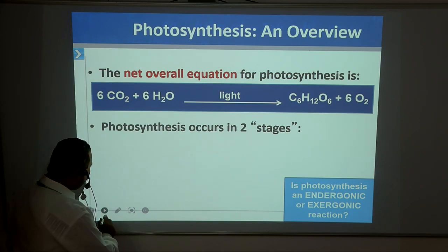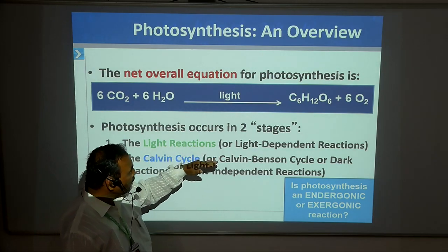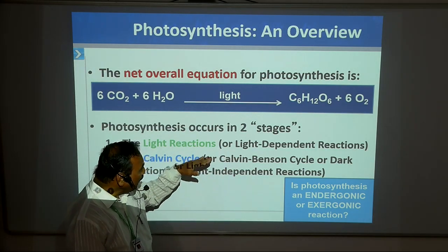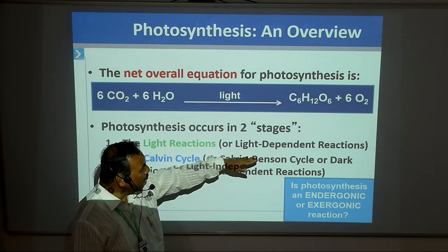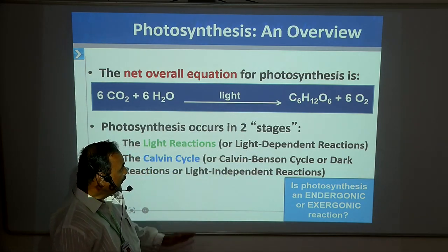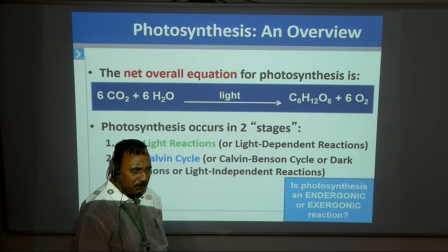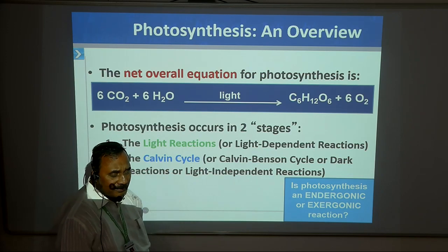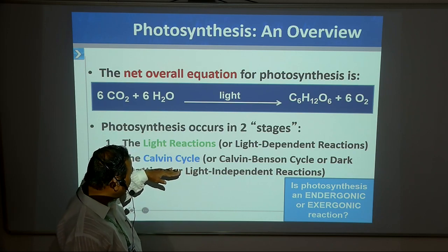The entire photosynthesis occurs in two stages: first, light reaction, and second, dark reaction. The reactions which take place in the presence of light are known as light-dependent reactions. They are related with the chlorophyll molecule. The second is the Calvin cycle, that is the dark reaction. Not only the Calvin cycle — the HSK pathway and other pathways are also included in this area.